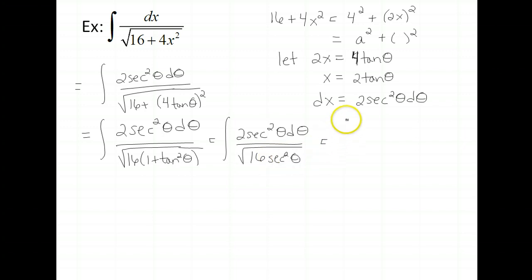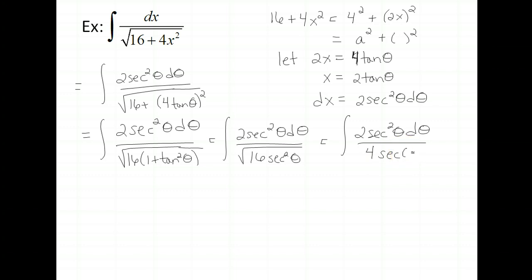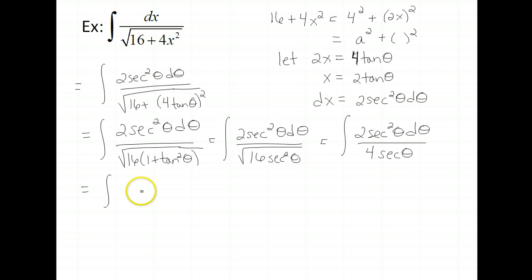We can continue and simplify. We have 2 secant squared theta d theta over 4 secant theta. The 2 and 4 simplify to 1/2, and the secants reduce, so we're left with 1/2 secant theta d theta.